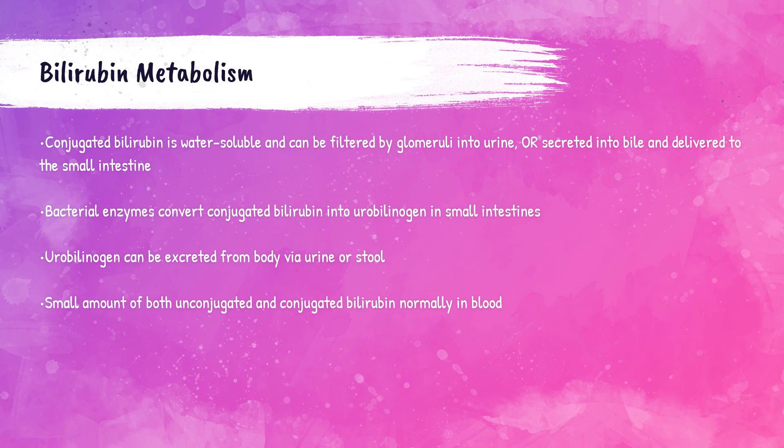This conjugated or direct bilirubin is now soluble in water. Because it is soluble in water, it can be filtered by the kidney or secreted into bile and taken to the small intestine. In the small intestine, enzymes from bacteria convert the conjugated bilirubin into something called urobilinogen. Urobilinogen can then be excreted from the body in either urine or stool, and it's actually responsible for the brown color of normal stool.